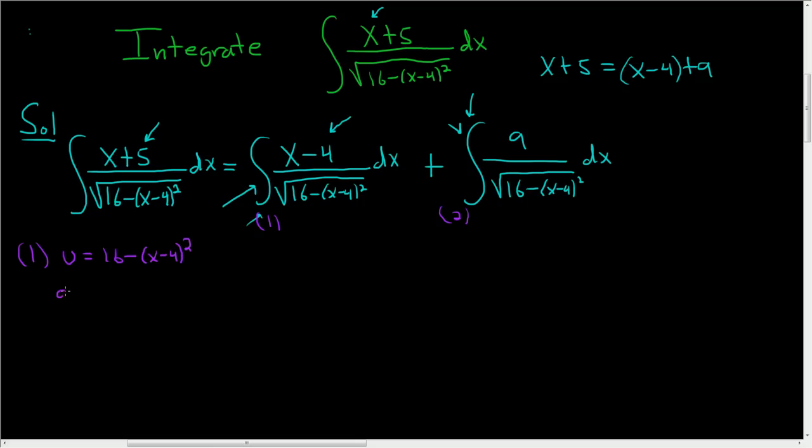And then du, well, the derivative of 16 is 0. Here you bring the 2 down. So we get negative 2, x minus 4 to the first power times the derivative of the inside.